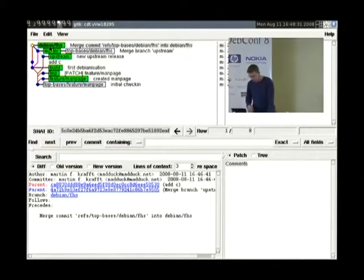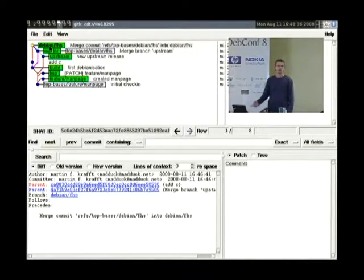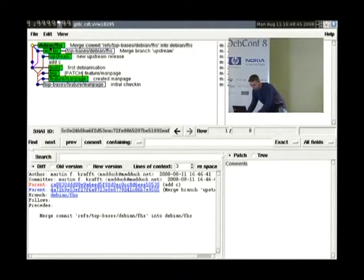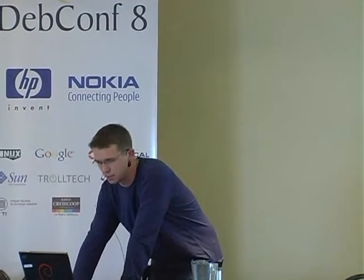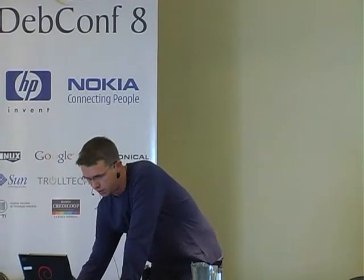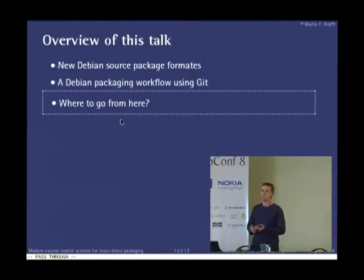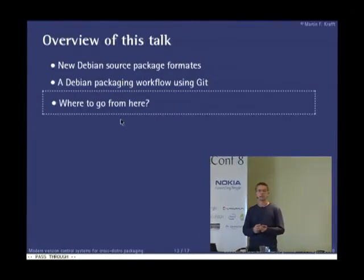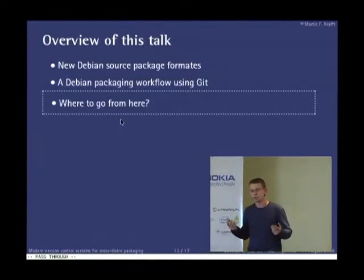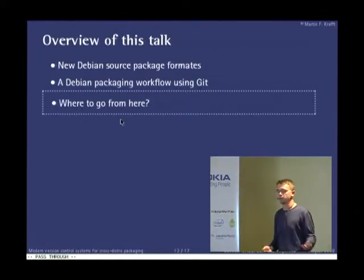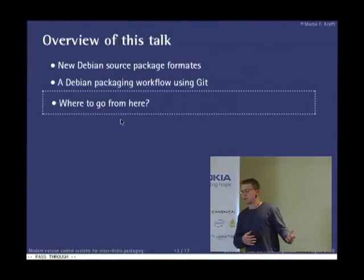Let me move on. What you saw was Git used for Debian packaging. What I hope you didn't see was anything very specific to either Git or Debian. Everything I did can be done with the other version control systems. And if you accept that creating debian/control and debian/rules is pretty much the same as creating an RPM spec file, then there was also nothing Debian-specific in what I just did.